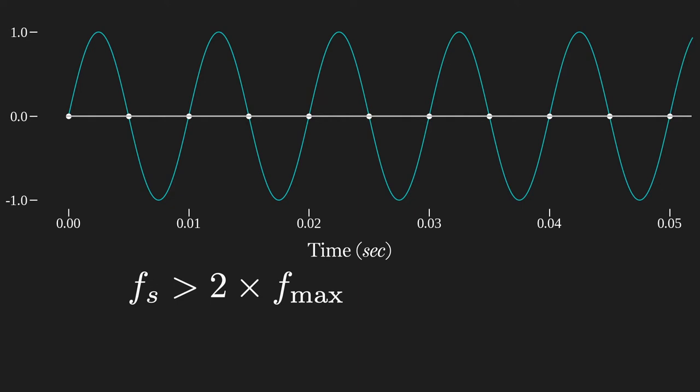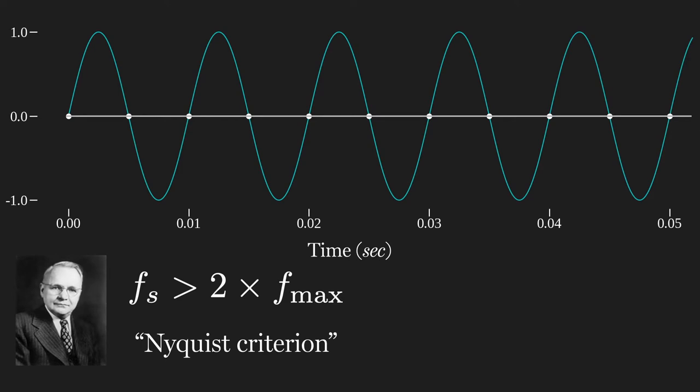The lowest frequency that fits our samples will be the right one. This is called the Nyquist criterion, named after Harry Nyquist, an early signal processing researcher. Half the sampling rate is also called the Nyquist frequency, or Nyquist rate. This is the highest frequency that can be accurately preserved and reconstructed at the current rate.